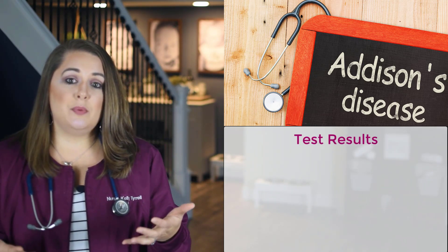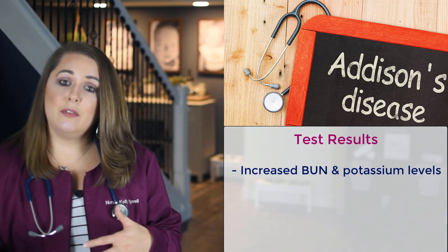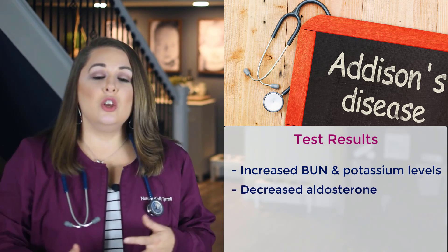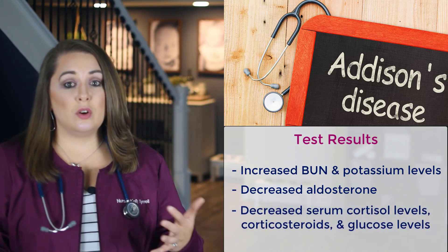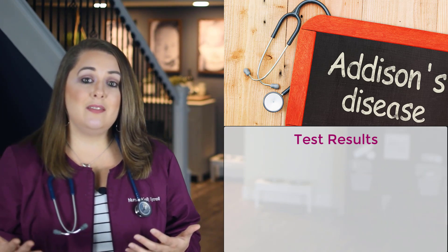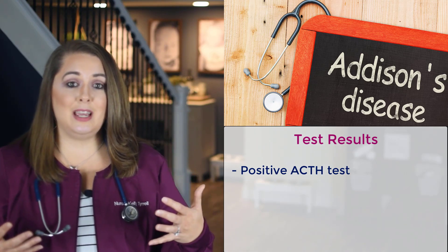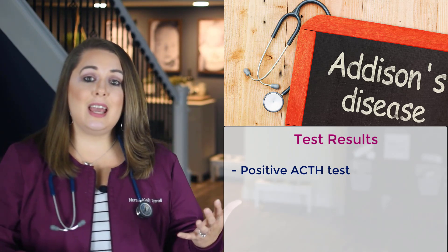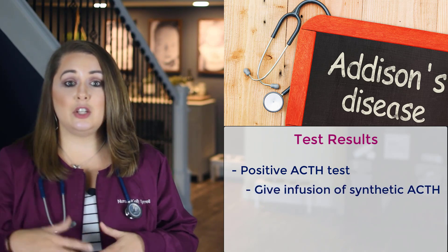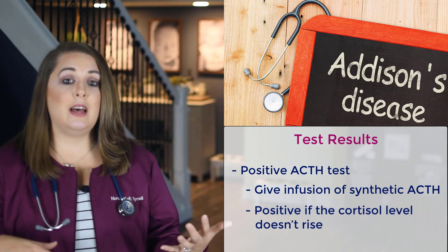Lab results for patients with Addison's will include increased BUN and potassium levels from dehydration due to decreased aldosterone. You'll also see decreased serum cortisol levels, decreased corticosteroids, and decreased glucose levels. You'll also see a positive ACTH test because of that bronzy hyperpigmentation of the skin. During the ACTH test, you give the patient an infusion of a synthetic form of ACTH, and the test is positive if the cortisol level doesn't rise after that infusion.